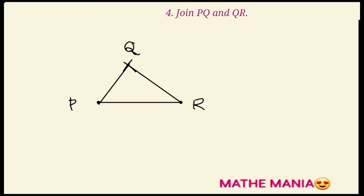Similarly, we will draw the lower triangle. For the lower triangle, PS is equal to 4 cm and RS is equal to 3.5 cm.